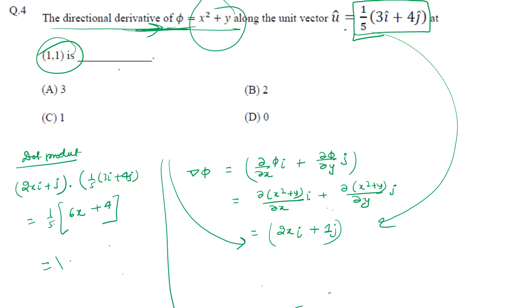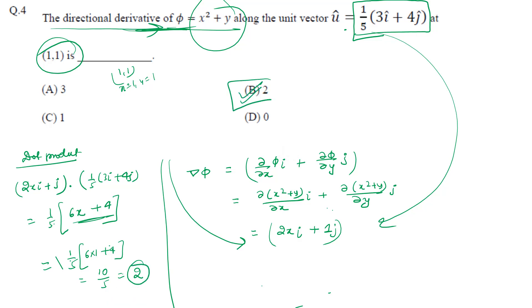We need the directional derivative at the point (1, 1), so x = 1, y = 1. Substituting: (1/5)(6×1 + 4) = (1/5)(10) = 2. So the answer is 2, which matches option 3.